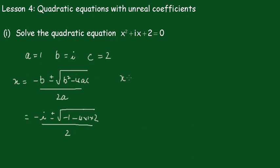So x is equal to minus i plus or minus square root of — now this becomes minus 9 — all over 2. Which is minus i plus or minus; now the square root of minus 9 is going to be the square root of 9 which is 3, and the square root of minus 1 is i, so it will be 3i, all over 2.